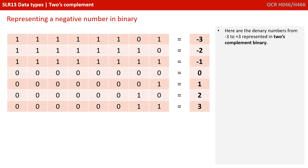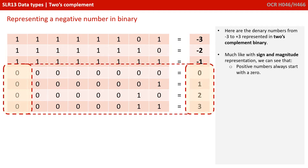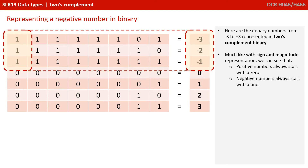Before we dive into how it actually works, a couple of observations. Here are the numbers minus 3 up to positive 3 in 2's complement. You will notice that all positive numbers always start with 0 — and in mathematics, 0 is considered a positive number, so this works fine. Likewise, all negative numbers always start with a 1.